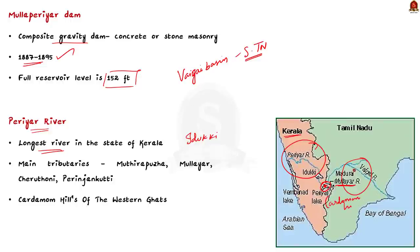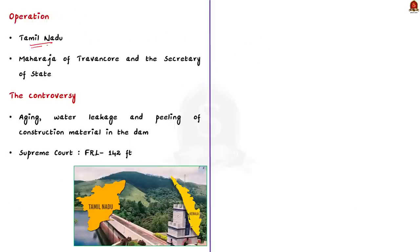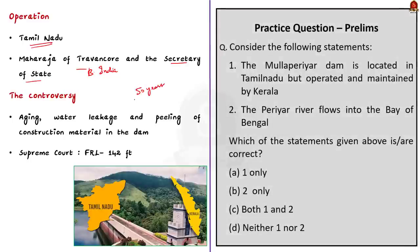Mullaipariyar Dam is located in the state of Kerala, but it is operated and maintained by the neighboring state of Tamil Nadu. This is due to the fact that water from the dam is used by Tamil Nadu farmers. This agreement was made possible during the times of British India. It was signed between the Maharaja of Travancore and the Secretary of State for India during British rule. British engineers anticipated 50 years as the lifespan of the dam, but today the dam has withstood for more than 120 years. There is a constant tussle between Kerala and Tamil Nadu regarding the Mullaipariyar issue. Kerala is afraid of the dam breaking due to aging, water leakage and peeling of construction material. Several petitions were filed and the Supreme Court has advised the full reservoir level to be maintained at 142 feet to the advantage of Tamil Nadu. Kerala is objecting this and demanding reduction of the full reservoir level.